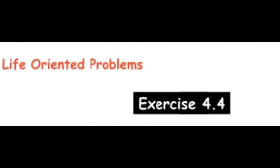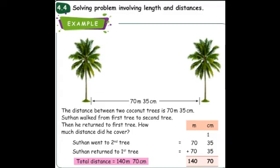I hope you understood these three sums. Now we are going to see solving problems involving length and distance. The distance between two coconut trees is 70 meters 35 centimeters, and a person named Sultan walked from the first tree to the second tree, then returned to the first tree. How much distance did he cover? Sultan is walking there and back — that means twice, up and down.